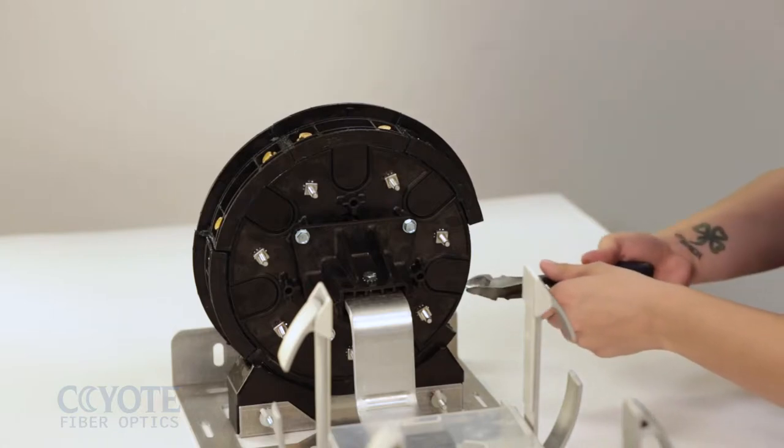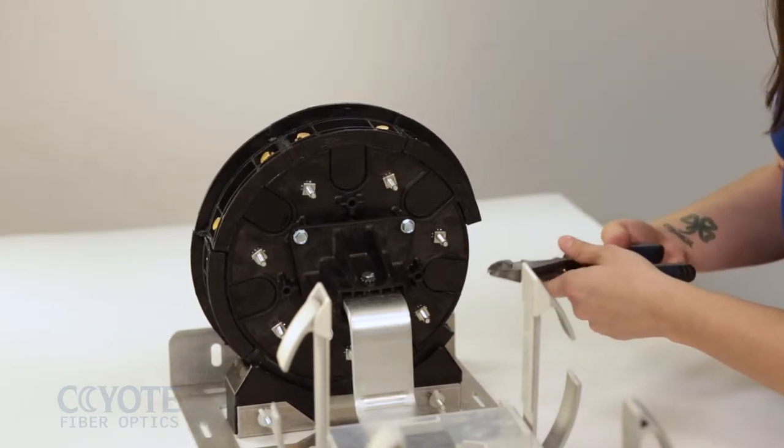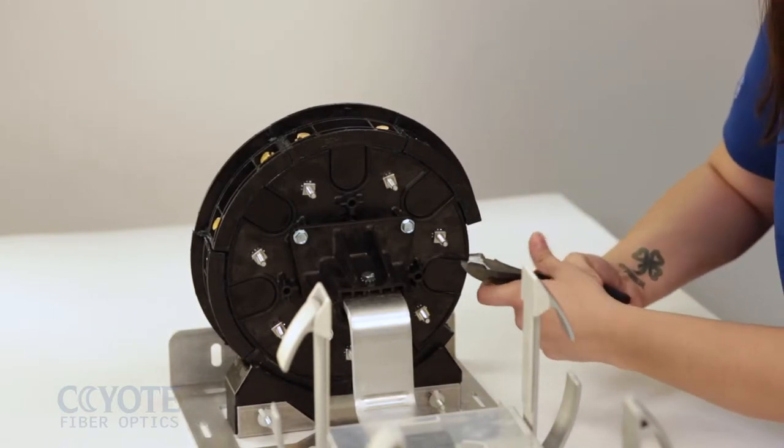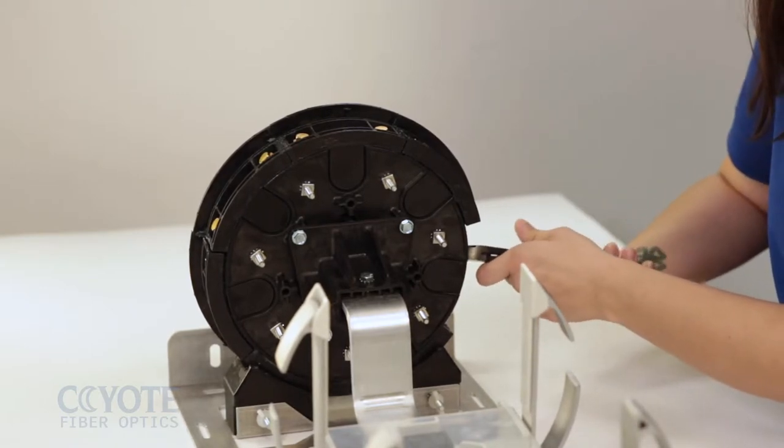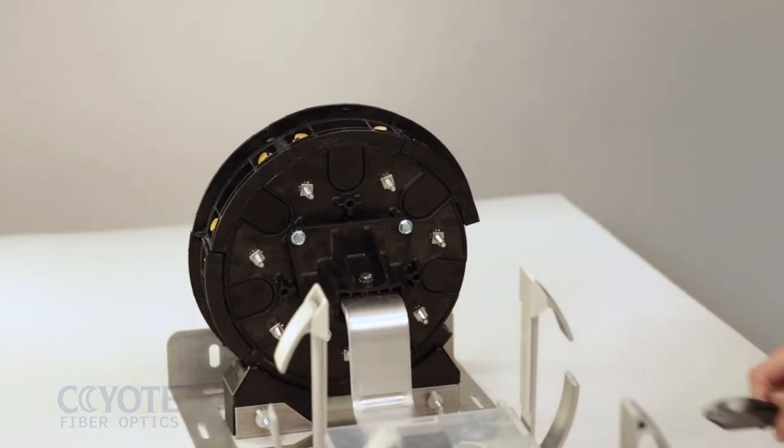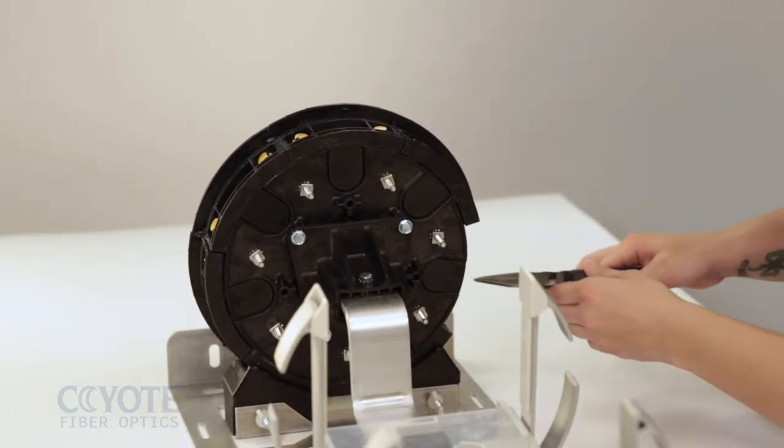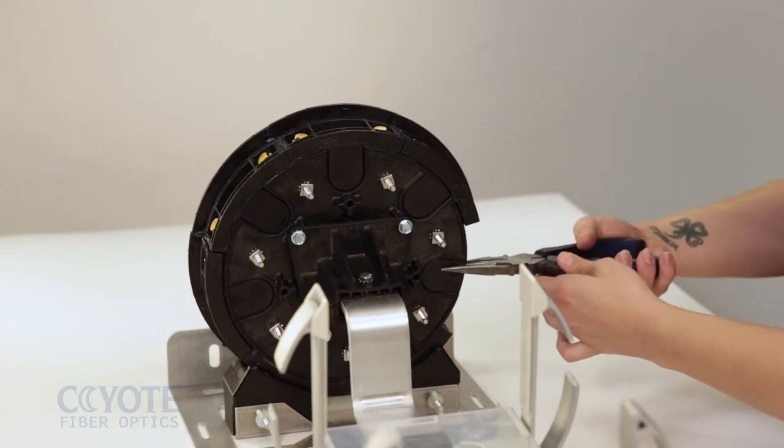Using side cutters, snip out the outer corners of the knockout tabs of the end plate. Remove the tabs with pliers.